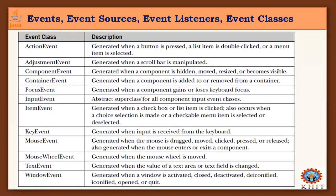These are the event classes and their descriptions. Action events are related to button press, list item double-click, and menu item selection. Adjustment events cover scrollbar manipulation operations. Component events cover things like a component being hidden, moved, resized, or becoming visible — all operations performed in a graphical user interface, such as moving an image box from one location to another, like in a presentation.